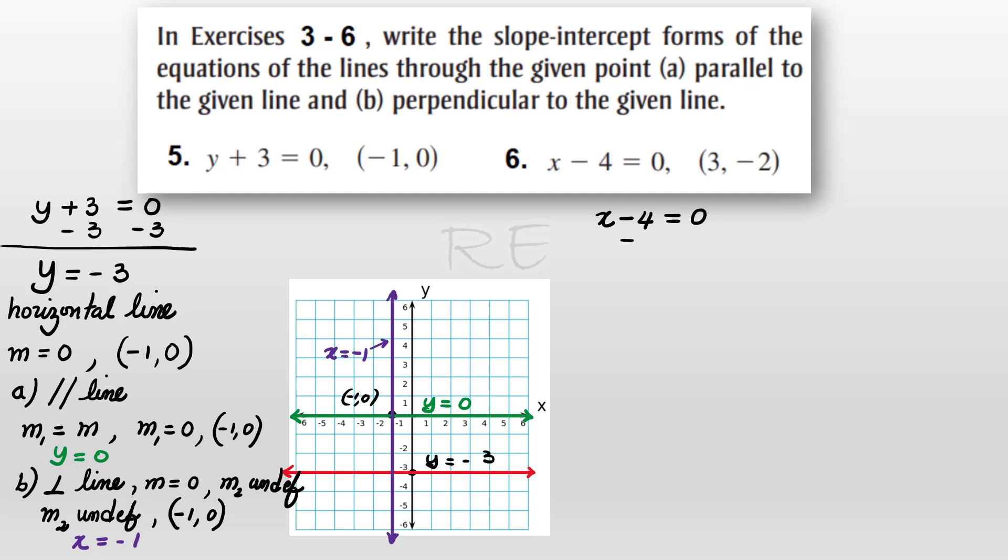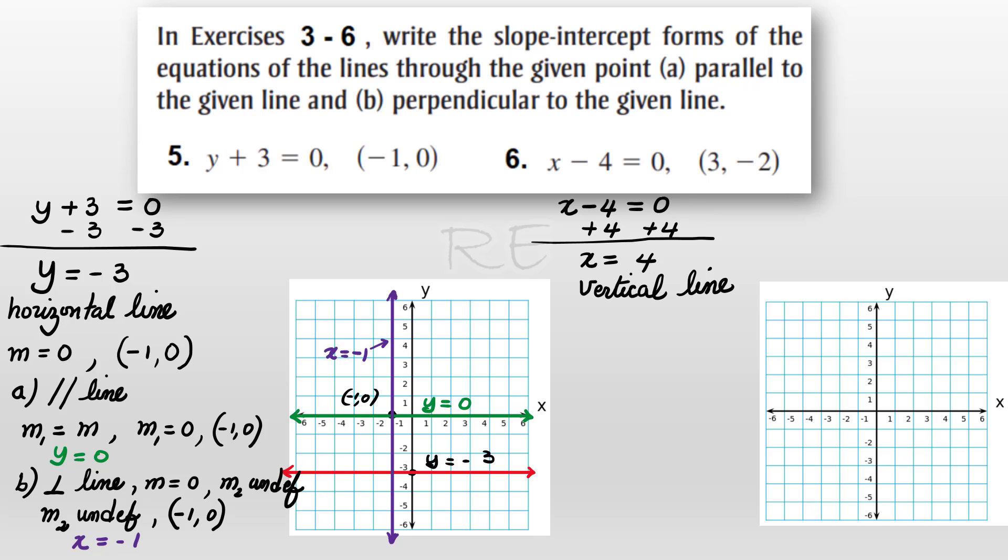For 6, we're going to solve the equation for x. And we get x equals 4, which is a vertical line. And as such, its slope is undefined.